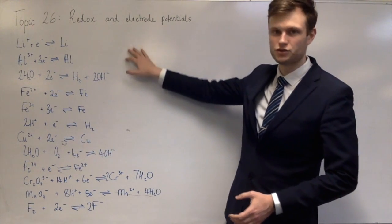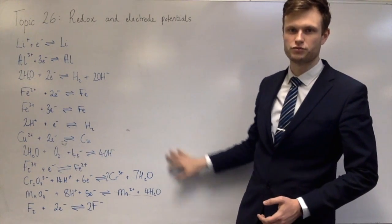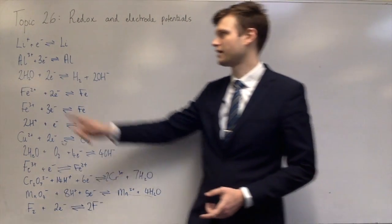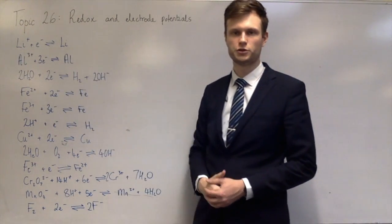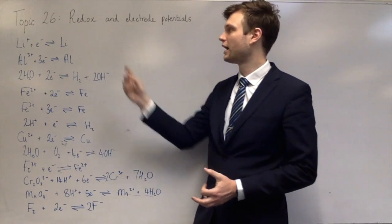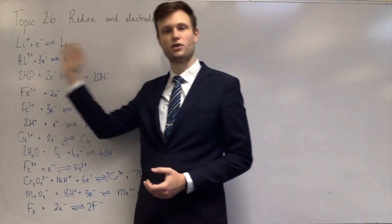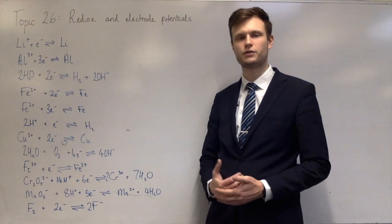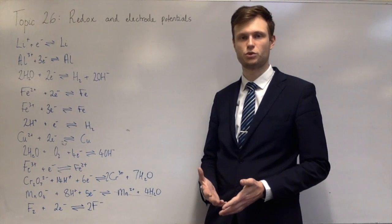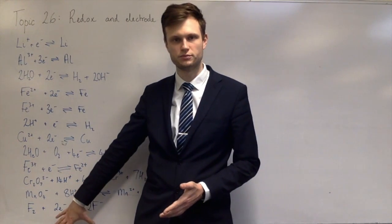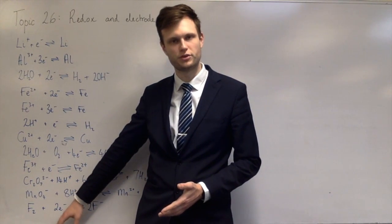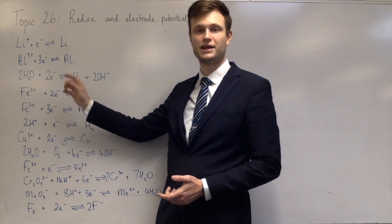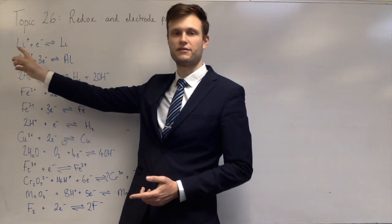What I've written down here is just a bunch of redox half equations. You can see that they're written as reductions in the forward reaction, because they're all gaining electrons, and then oxidations for the reverse reactions. I've written them in a specific order — the reactions at the bottom have the equilibrium sitting far to the right, and as you go up, that equilibrium sits further and further to the left.